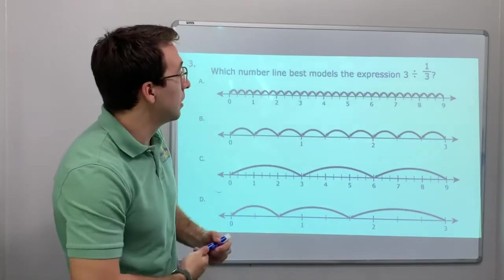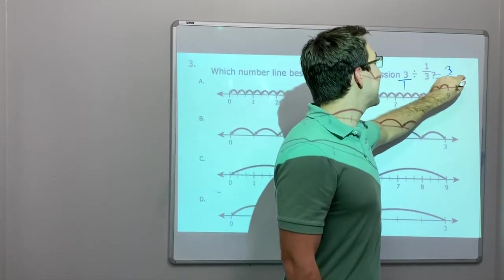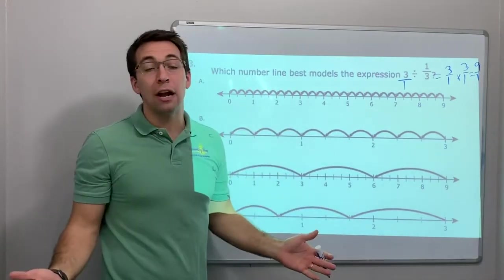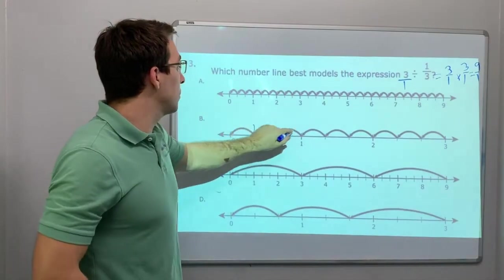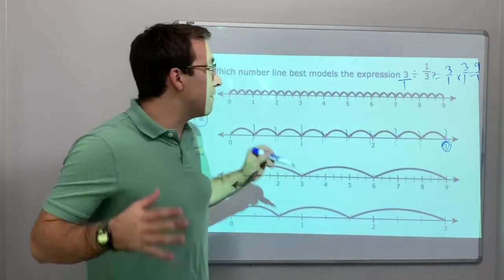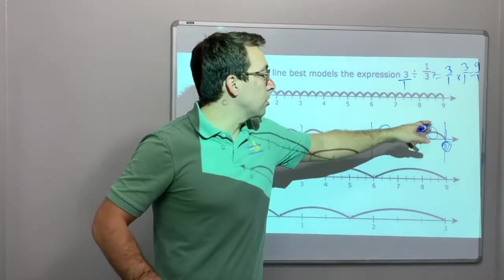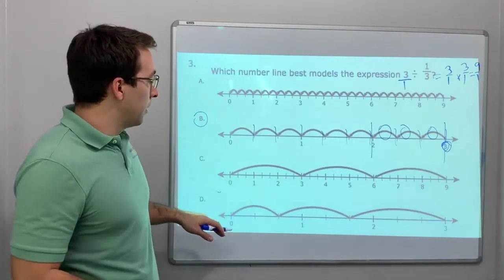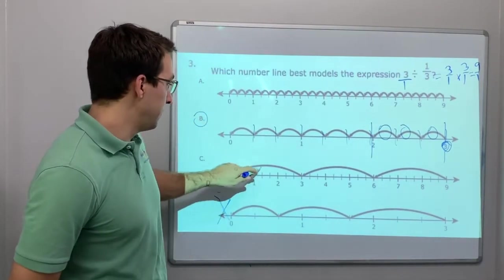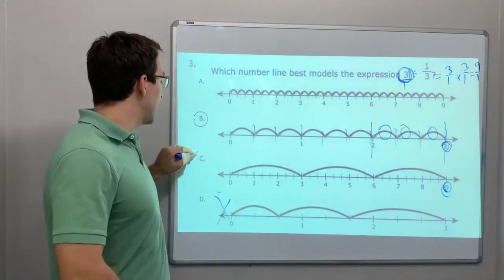Which number line best represents three divided by one-third? 3/1 divided by 1/3 equals 3/1 times 3/1 equals 9/1. Multiply and flip — that is how you divide a fraction. So we need nine. We have three divided by one-third between two and three, with three sections: one-third, two-thirds, three-thirds. Notice this is unequal — that's not equal parts. And we're not getting to nine since we started with three, so our answer cannot be bigger than three. So C and A are wrong.